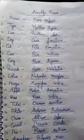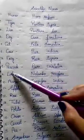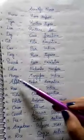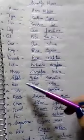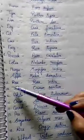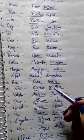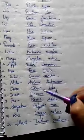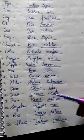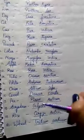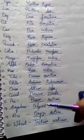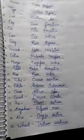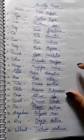Frog — Rana tigrina; Peacock — Pavo cristatus; Lotus — Nelumbo nucifera; Mango — Mangifera indica; Apple — Malus domestica; Rose — Rosa indica; Tulsi — Ocimum sanctum; Potato — Solanum tuberosum; Onion — Allium cepa; Carrot — Daucus carota; Pea — Pisum sativum; Soybean — Glycine max; Rice — Oryza sativa; Wheat — Triticum aestivum.